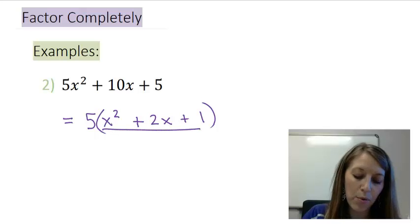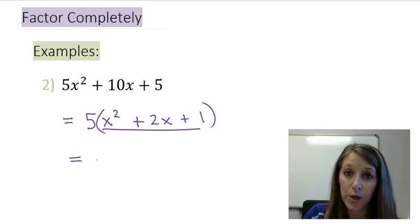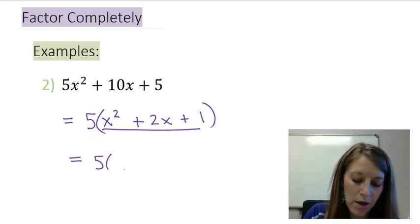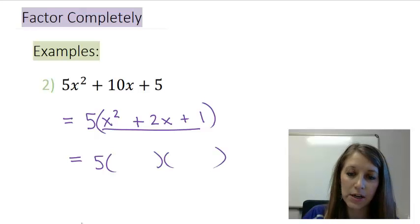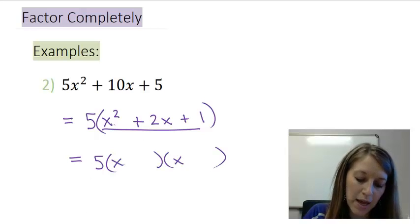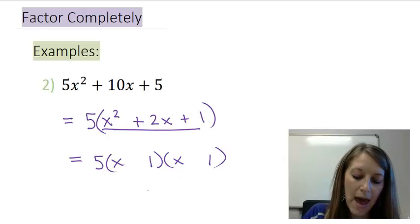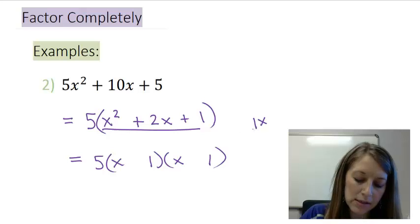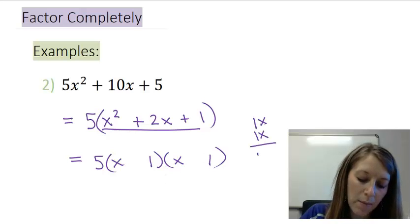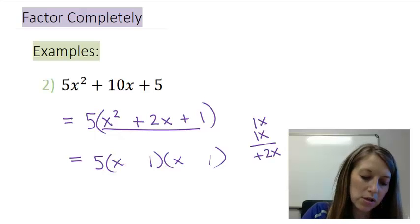Then if I look in my parentheses I have three terms or a trinomial. So I set up my parentheses here. X times x gives me x squared. 1 times 1 gives me 1. My outside gives me a 1x. My inside gives me a 1x. And I want to come up with a positive 2x. So I can do that by making them both positive.